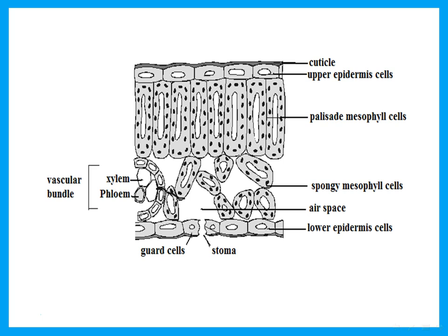In the lower epidermis we have what we call guard cells. Guard cells are cells that have a hole in the middle, which we call a stoma — plural is stomata. We also have in the leaf xylem and phloem. Xylem is the one that brings water and salts to the leaf from the roots. Phloem is the one that carries the sugars made in the leaf by photosynthesis to the rest of the plant.